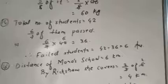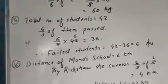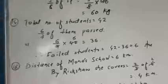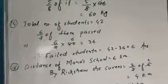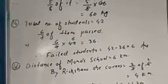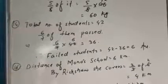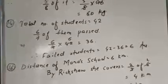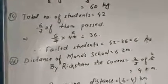So 6 by 7 of 42, it will become 36. That means 36 students passed. We will subtract this from the total students to find those who failed.